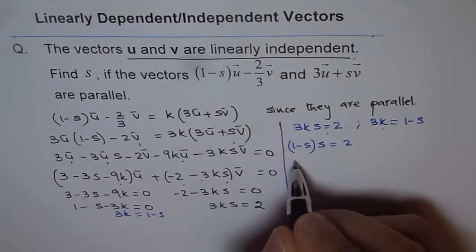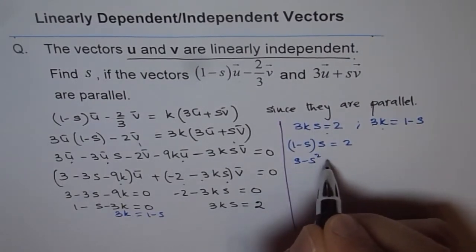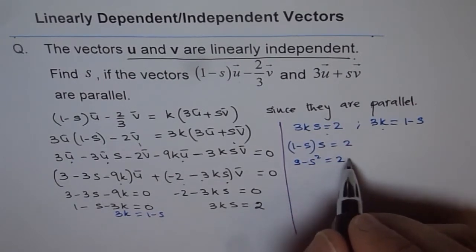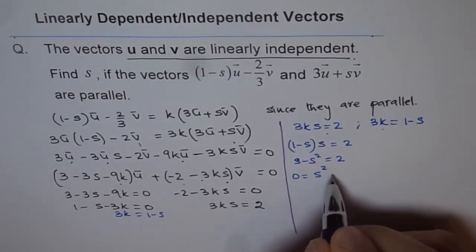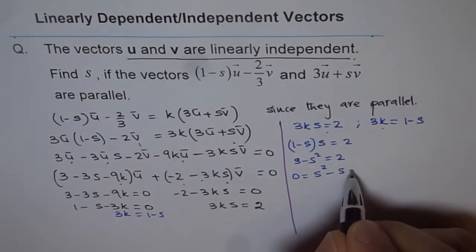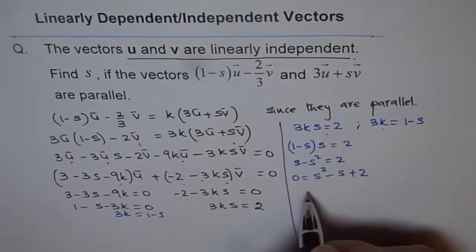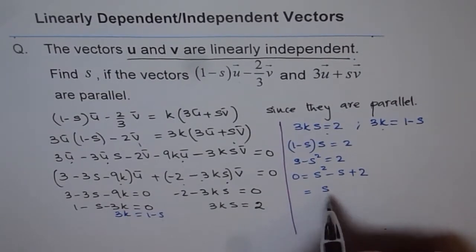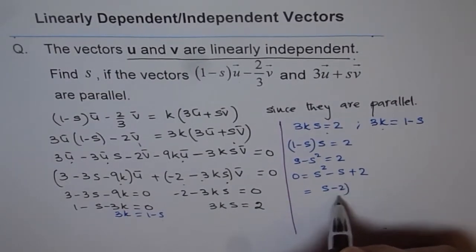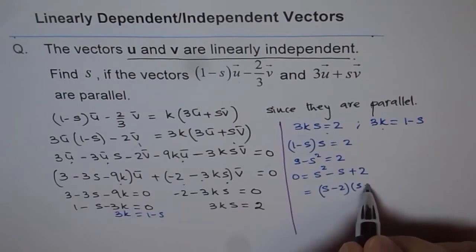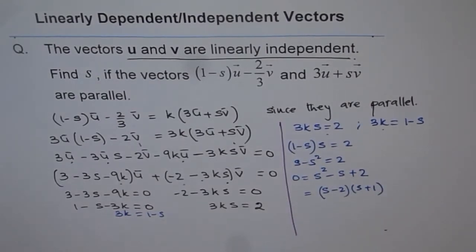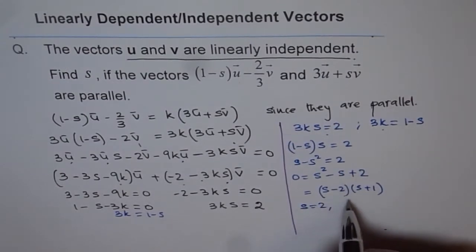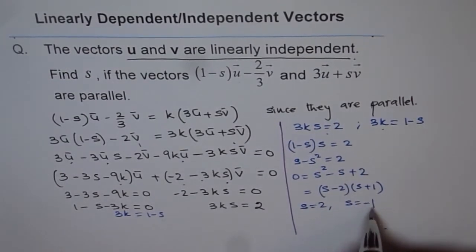So, we get s - s² equals to 2. Let's bring all the terms to one side and say 0 equals to s² - s + 2. Now, this can be factored and we have 0 equals to (s-2)(s+1). Now, this is possible if we have value of s equals to 2 or s equals to minus 1.